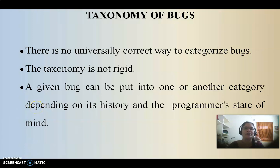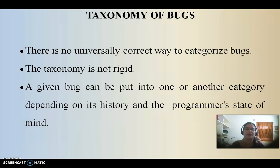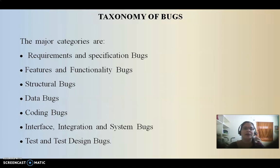Actually, universally there is no correct way to categorize bugs, there is no fixed criteria. Based on the situation we categorize bugs. A given bug can be put into another category depending upon its history and the programmer's state of mind. Whatever bug it is, depending on its history and how the programmer thinks, based on that he can do the categorization. That is called taxonomy of bugs.